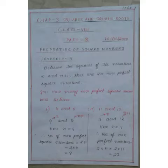Now today we shall start with property 4, which states that between the squares of the numbers n and n+1, there are twice n non-perfect square numbers. Suppose we have a number 9.